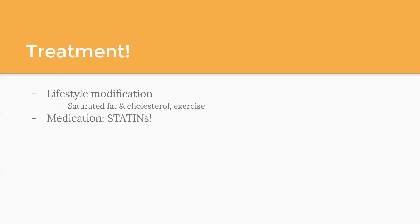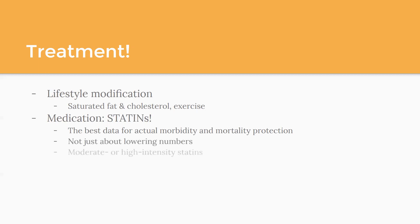And then medication — statins. The vast majority of the data, and this is not about titrating numbers but about reducing risk over time, shows the best data for morbidity and mortality protection — preventing heart attack, stroke, and death — is statins. The recommendations talk about low, moderate, and high intensity statins. For the vast majority of patients, guidelines recommend a moderate intensity statin. High intensity is for certain populations, and that has to do with what medication and what dose — higher doses of certain medications are considered high intensity.